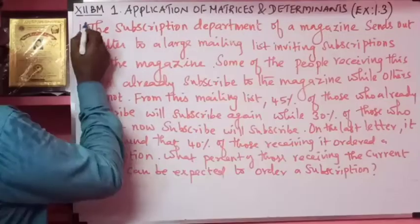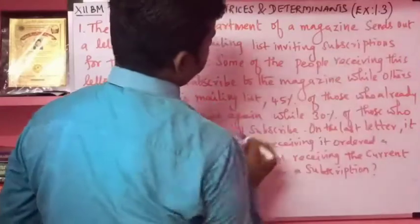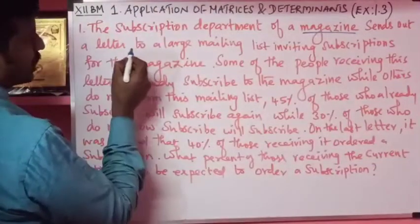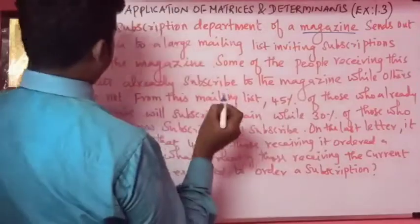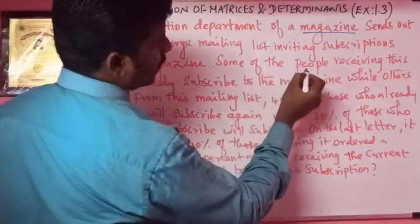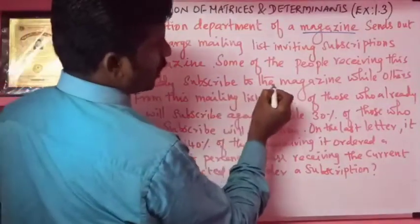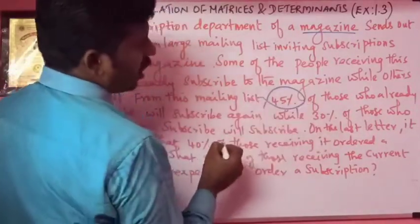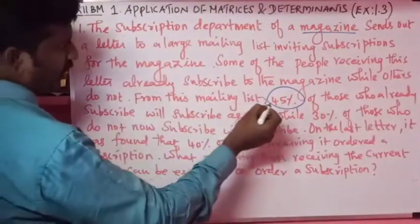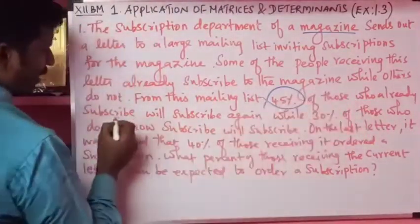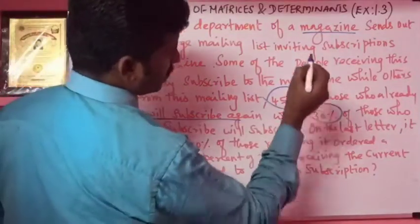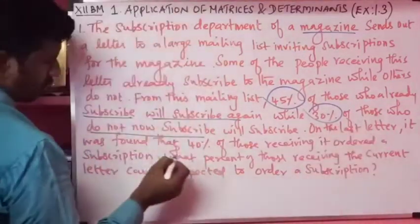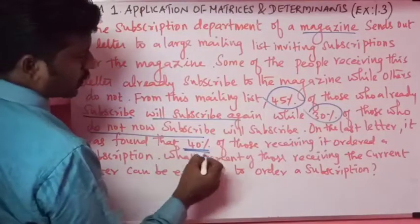Question number one in exercise 1.3: The subscription department of a magazine sends out a letter to a large mailing list inviting subscriptions for the magazine. Some of the people receiving this letter already subscribed to the magazine while others do not. From this mailing list, 45 percent of those who already subscribed will subscribe again, while 30 percent of those who do not now subscribe will subscribe on the last letter.